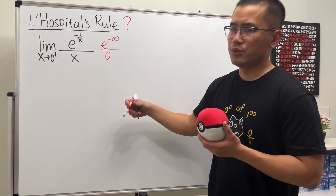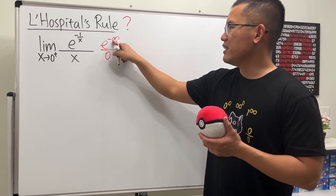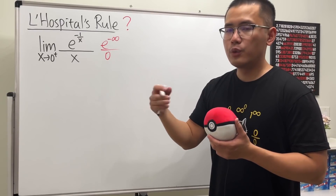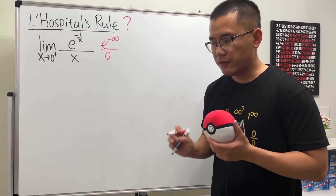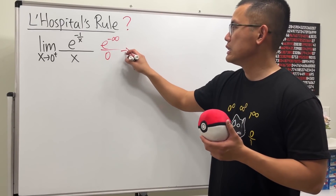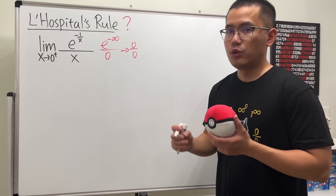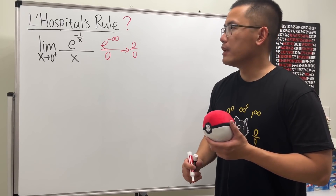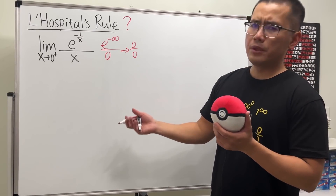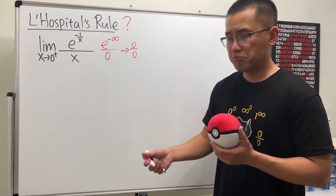That is 0, because e to the negative infinity is the same as 1 over e to the infinity, which is 1 over infinity, which is 0. So it is 0 over 0. L'Hôpital's rule should work, because that's what we need.